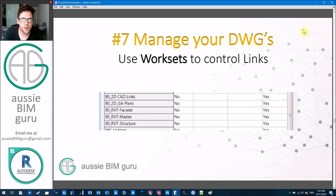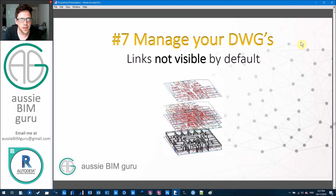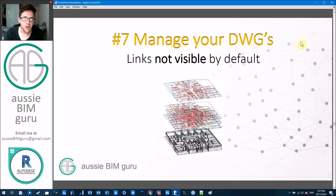You need to use worksets to control your links. On a work shared project, I always recommend that major CAD files have their own dedicated worksets — for example, the project survey should have its own workset so that people don't work with it if they don't need to. This also lets you make links not visible by default, so when you open a new 3D view you don't see all the CAD information in the way and have to go into visibility graphic settings to turn off imported categories.